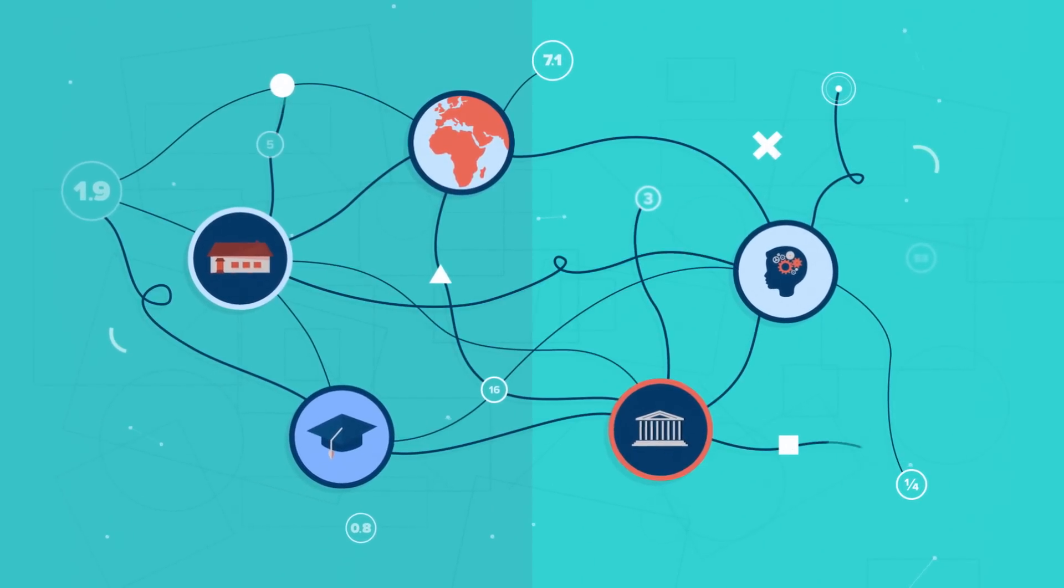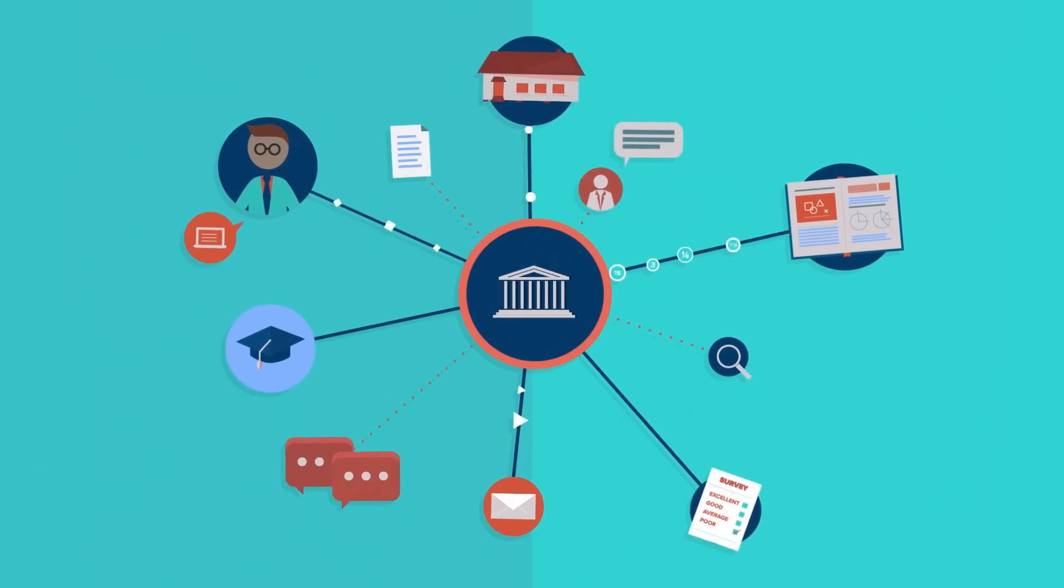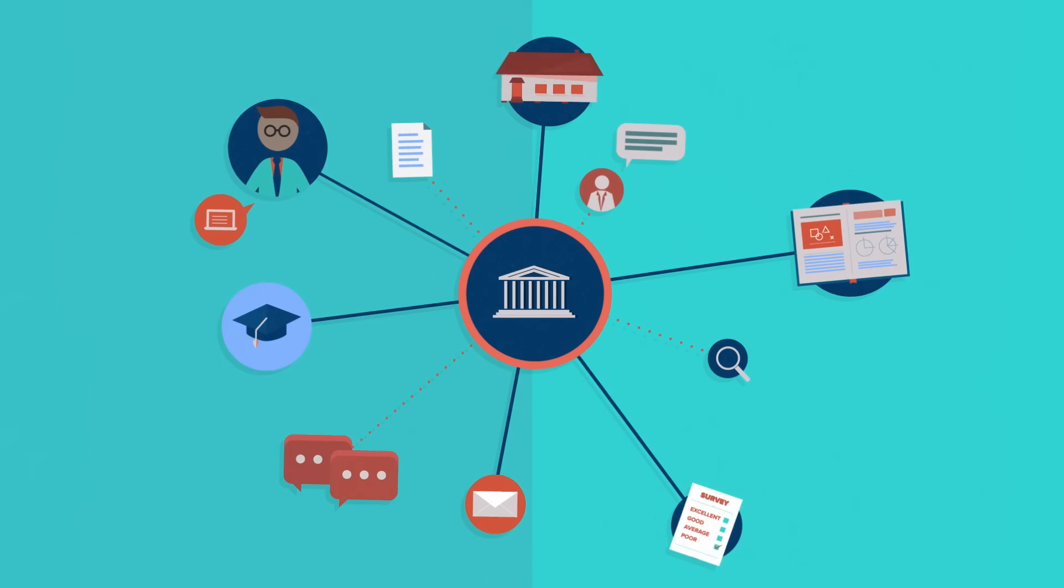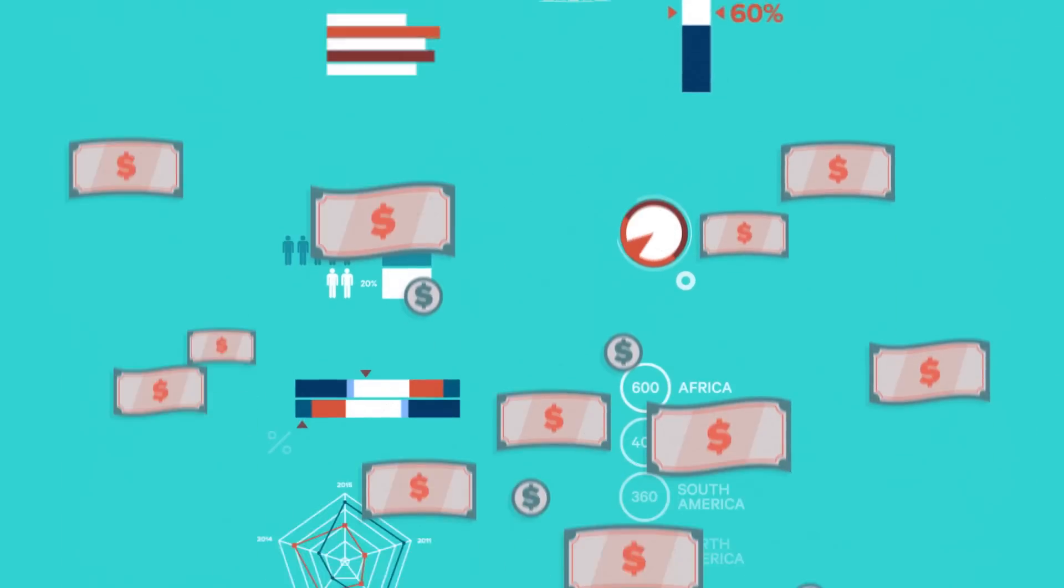But data are messy. Education data come from many sources, each with its own criteria and classifications. This makes it hard to answer even simple questions, such as how much does education cost?